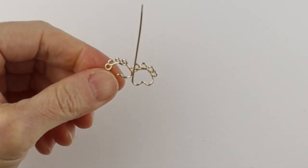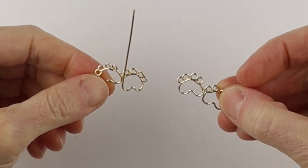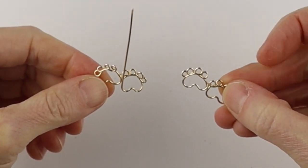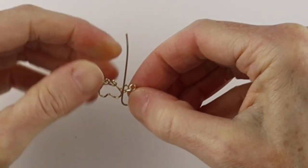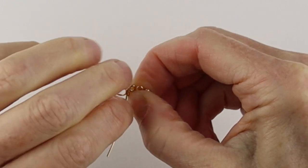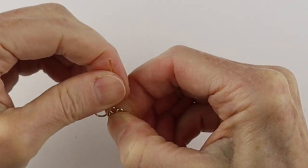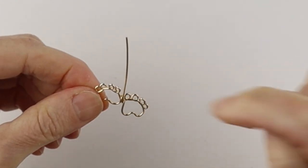So you have your two paws here and you can leave it plain like this and just dangle a hook or a jump ring on there, or you can bend this around and bring it up and put some beads on there.